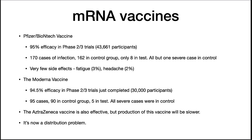The Moderna vaccine was just as effective. In their 30,000-patient cohort, 95 cases were reported — 90 in the control group and only five in the test group — and all severe cases of COVID-19 were in the control group. This indicates the vaccine not only protects against the disease, but if you do get sick, you are far less likely to get severe illness. The AstraZeneca vaccine achieved 90% efficacy with one dosing protocol.